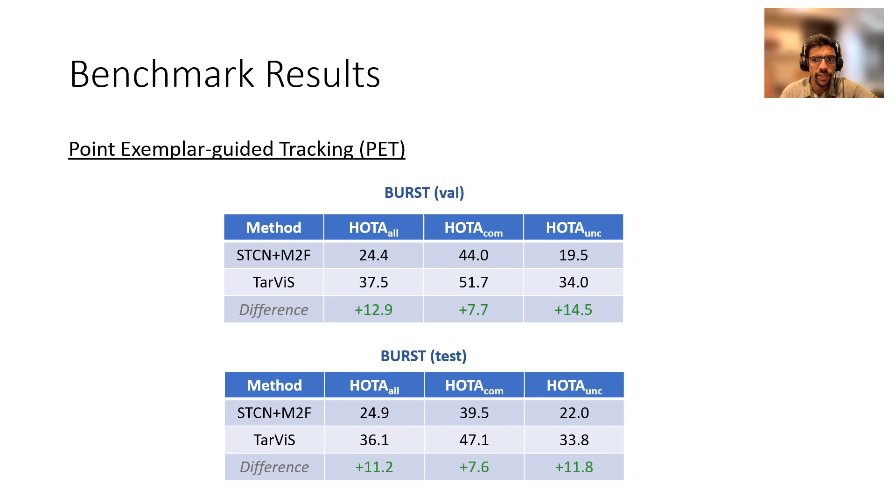Moving on to point exemplar guided tracking, we see that Tarvis performs significantly better compared to the dataset's baselines. The performance gained for both validation and test sets is over 10% for the final HOTA metric.